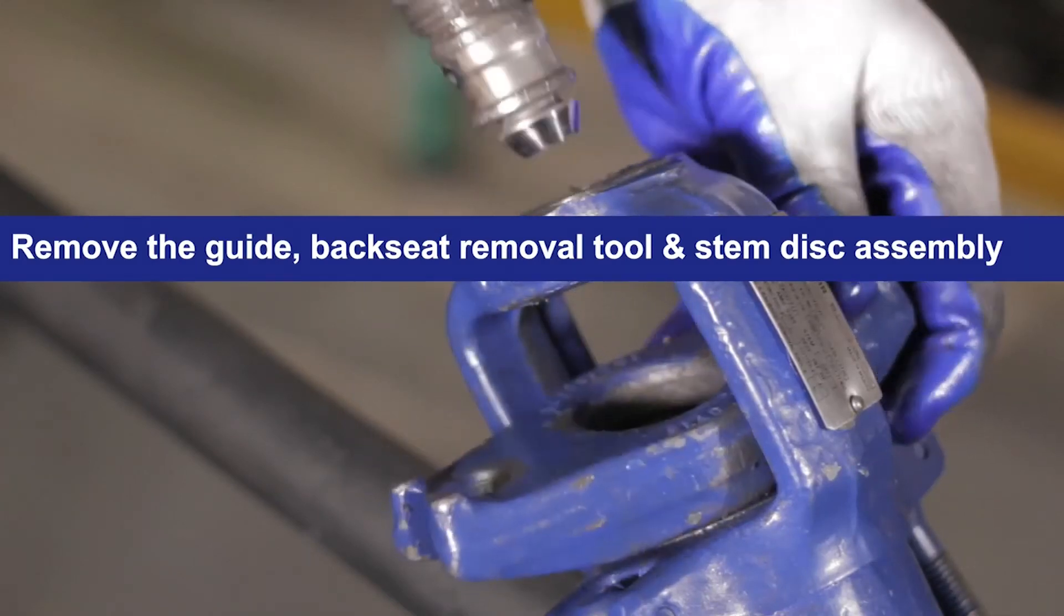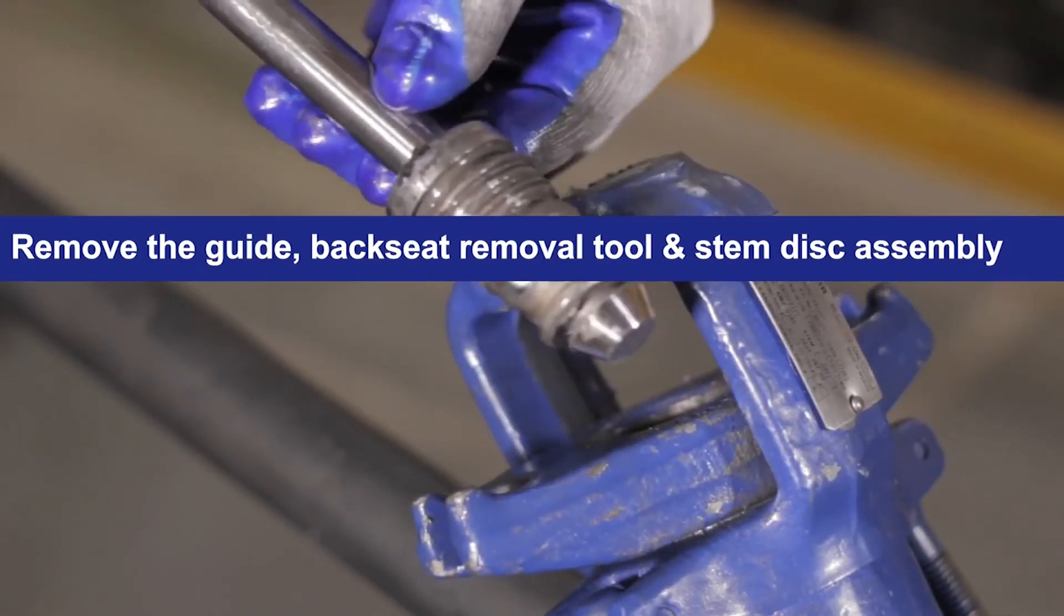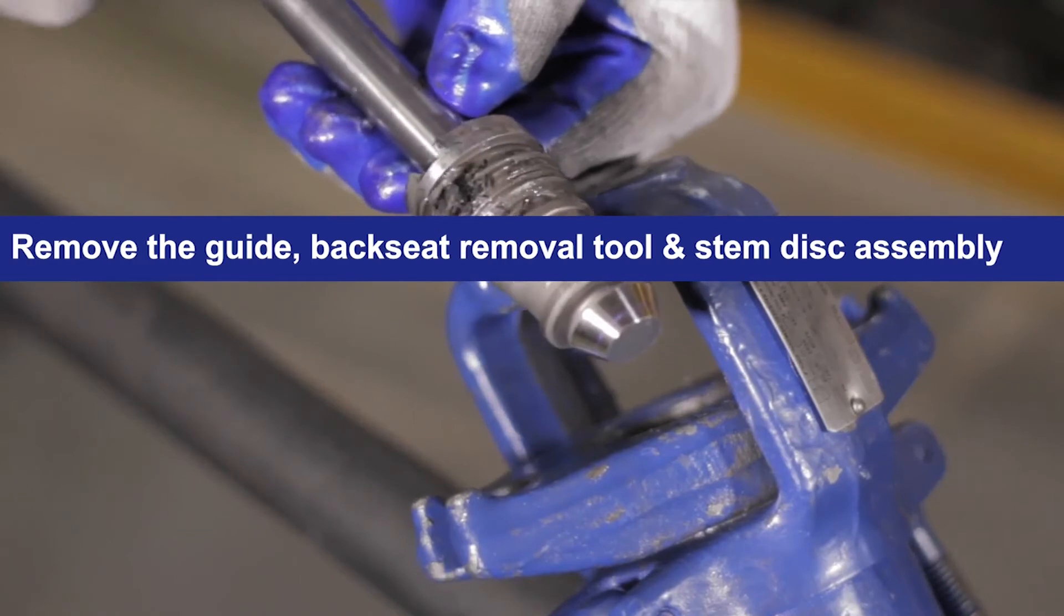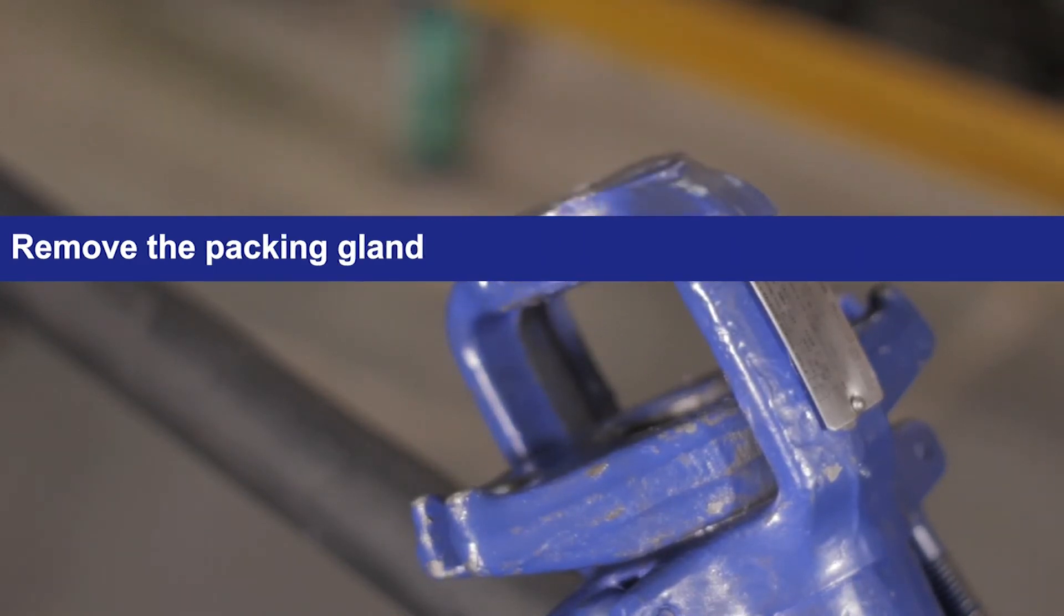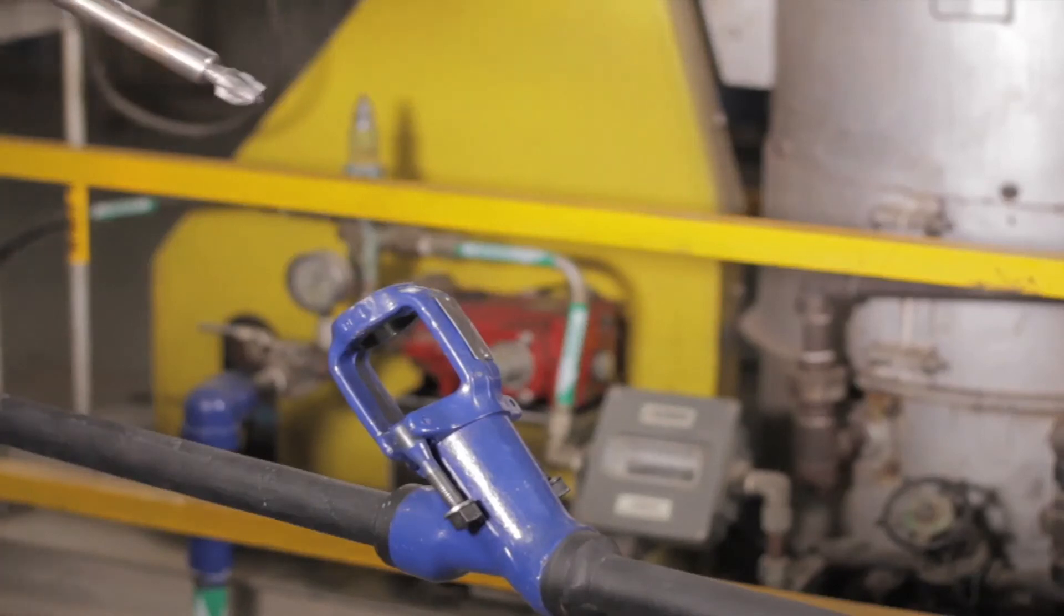You can now remove the guide, the backseat removal tool, and the stem disc assembly out of the valve's body. You should also remove the packing gland. The valve seat is now ready to be reconditioned.